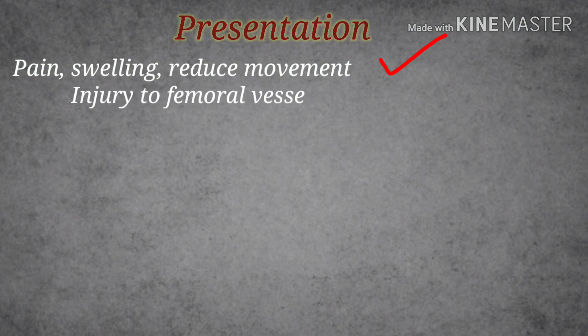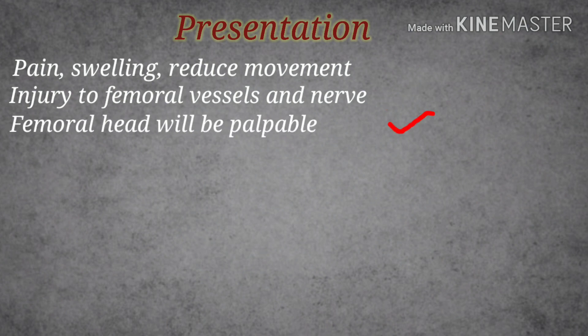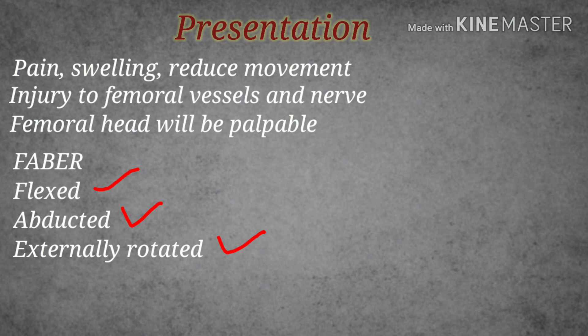There may also be injury to the femoral vessels and nerve. The head of the femur can be felt and palpated anteriorly. The typical presentation of anterior hip dislocation is that the leg will be flexed, abducted, and externally rotated — these are the key signs to remember.